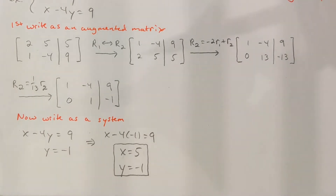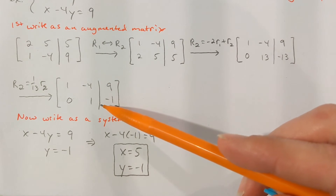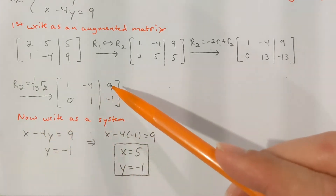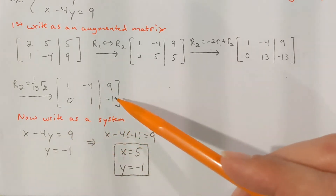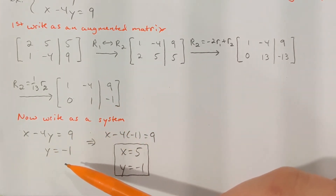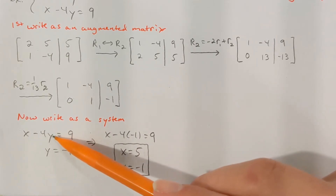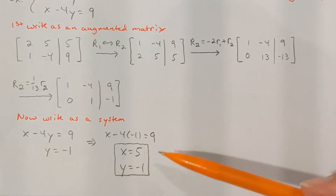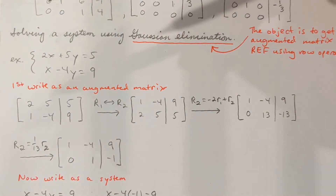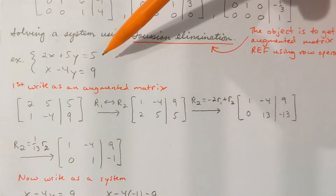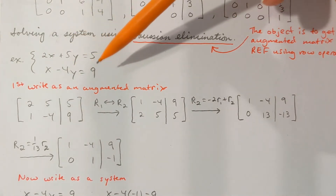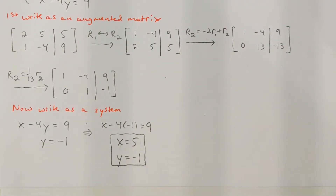I've rewritten this augmented matrix back as a system. I've got x minus 4y equal 9 for the top equation, and y equal negative 1 for the second equation. So y is negative 1. Knowing that, I plug negative 1 into the top equation, and if I subtract 4 from both sides, x would be 5. The solution is x equals 5 and y equals negative 1. Checking: is 10 minus 5 equal to 5? Yes. And is 5 minus negative 4 equal to 9? Yes, 5 plus 4 is 9. So x equals 5, y equals negative 1 is the solution.